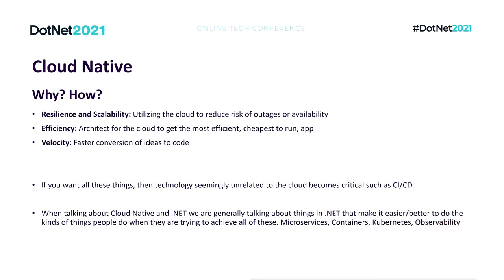So for this talk, when talking about cloud-native and .NET, I'm generally going to be talking about any features that seem interesting when building the types of applications that give you resiliency, efficiency, and velocity — things like microservices, containers, Kubernetes, and observability. I'm not going to show you every feature of .NET 6; it's more of me running through the fields of features and picking things I thought were interesting along this topic.